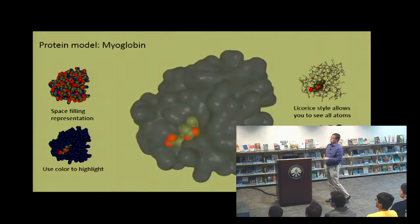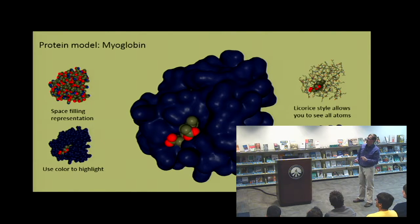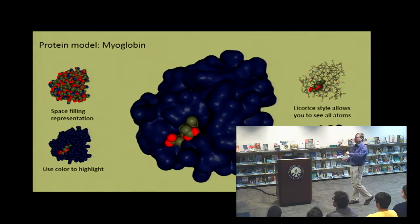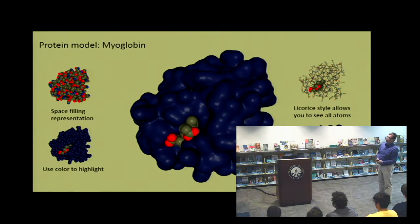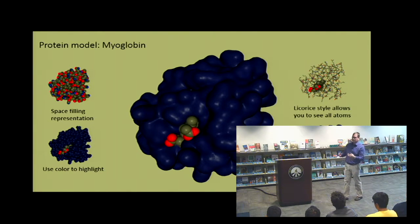The final representation is the surface representation. In the computer, you take a theoretical atom about the size of a water molecule — five to six angstroms wide — and roll it around the surface of your space-filling representation. This shows which surfaces of the protein are actually accessible to smaller molecules like water, ions, or cofactors. It's a nice way of seeing pockets inside the protein where molecules might bind.